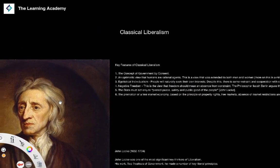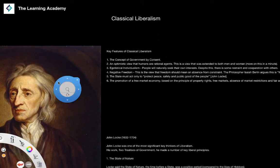We're going to take a look at the features of classical liberalism and develop a deeper understanding of what it is. We've gone through liberalism more generally in the last few videos, looking at the concept of liberalism and the core ideas. Now we're going to look at the actual different varieties of liberalism. In this lesson we do classical liberalism, in the next we do modern liberalism, and then we look at neoliberalism as well.